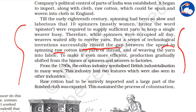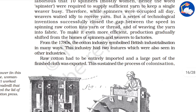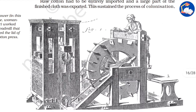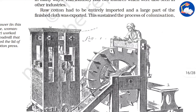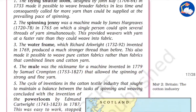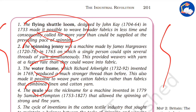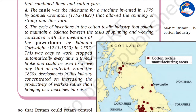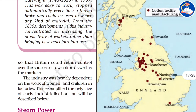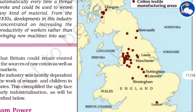As a series of technological inventions successively closed the gap between spinning raw cotton, production gradually shifted from the homes of spinners and weavers to factories. What had been a cottage industry developed into a large-scale industry, and the finished product was exported — sustaining the process of colonization. Inventions like the spinning jenny, water frame, mule, and flying shuttle loom transformed the industry, though they also replaced the jobs of many common people, leading to widespread protest.